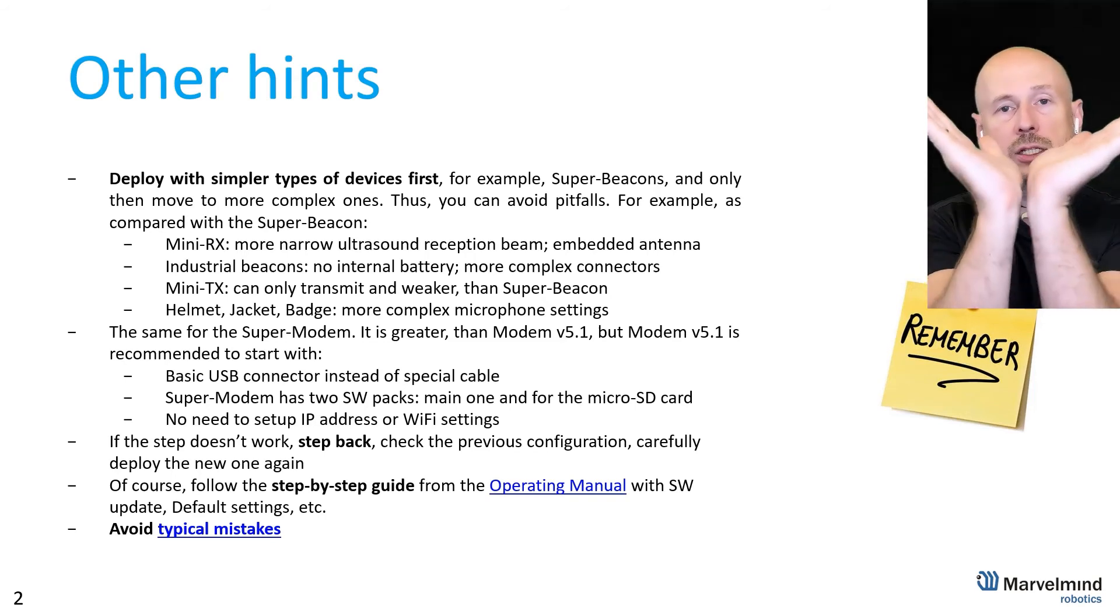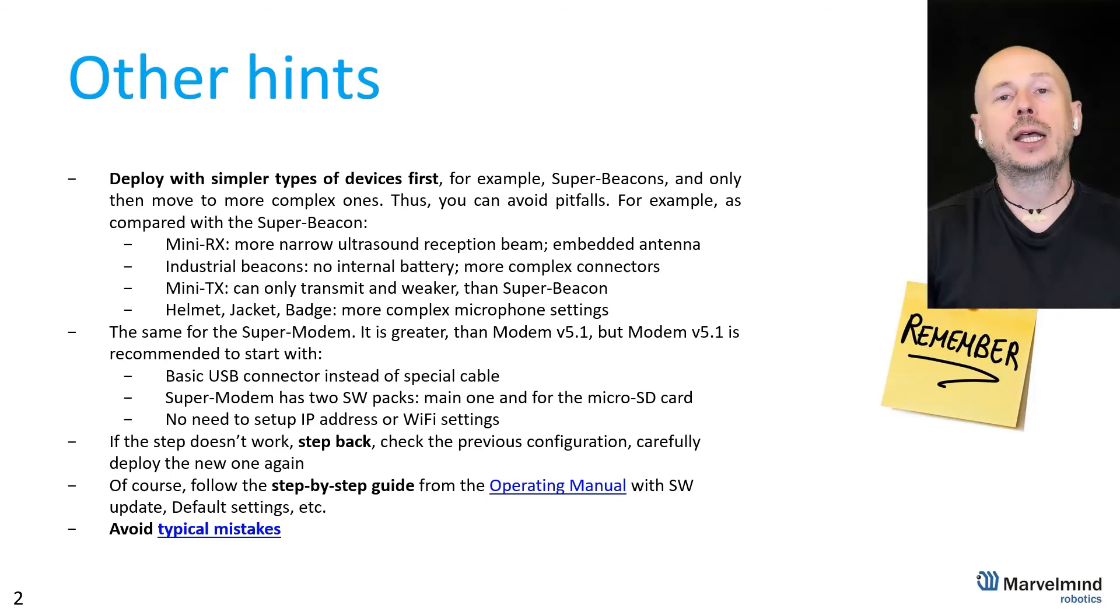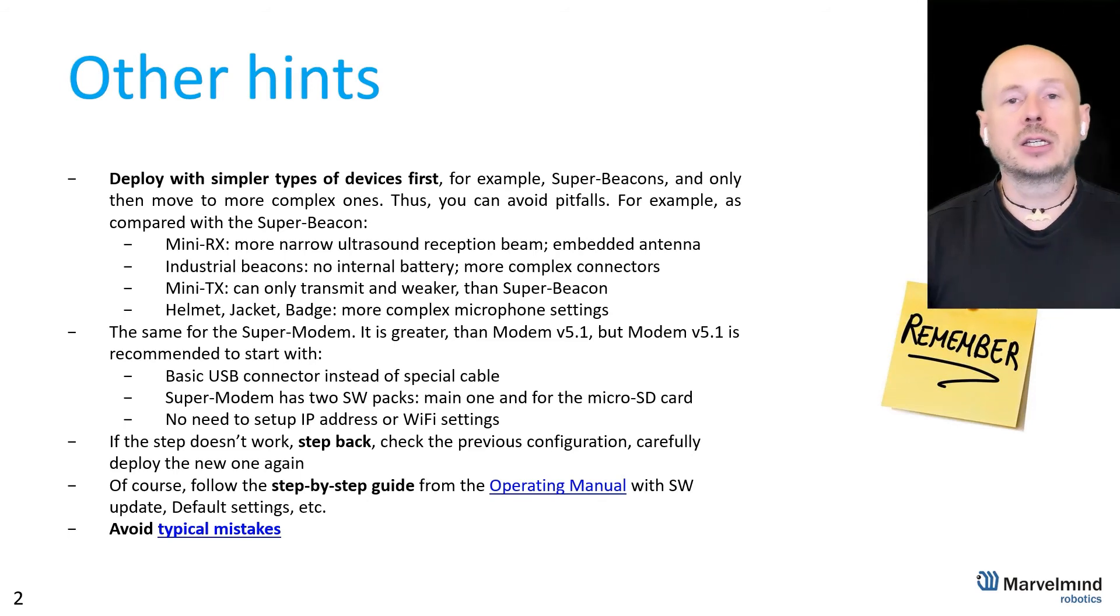For mini RX for example that's not the case because mini RX doesn't emit anything so it means that you cannot build the map, you must enter the distances. Super mini RX has around 120 degrees diagram not 180 degrees diagram. Mini RX has a smaller antenna so in case you have larger distances or there is interference etc there's a high chance to have a problem due to this. So super beacon is simpler so start with something simpler with super beacon. Later on of course you will replace instead of the mobile beacon super beacon you will use a hedge for example or a jacket or watch or whatever which is more demanding in terms of coverage, but start with something simple which is super beacon.